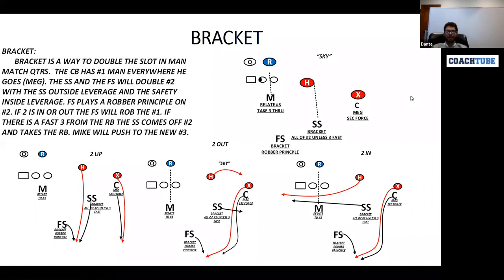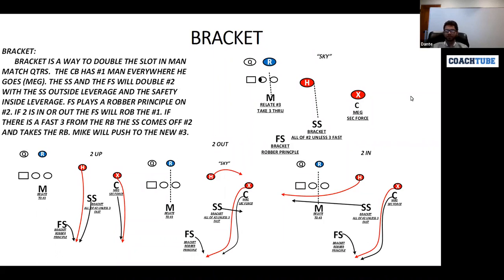The corner will be playing MEG — MEG stands for man everywhere he goes. That means he's man-to-man no matter what. He will be playing inside and on top of number one. The reason we have him play inside on top of number one is because we do not know if we're going to have help from our bracket safety. So we have to play inside on top to deny the vertical release and cut the receiver off.